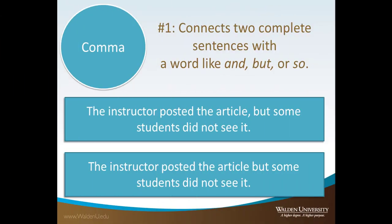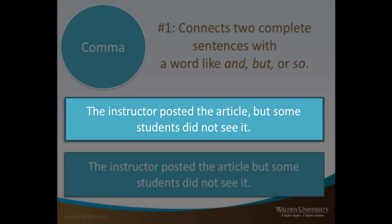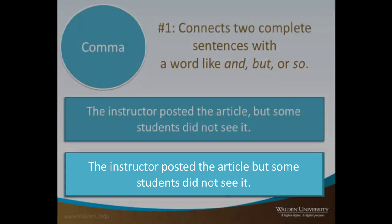Commas in academic writing follow a few patterns and we're going to focus on two common uses of commas. First, commas are commonly used to connect two complete ideas in one sentence with a coordinating conjunction word like and, but, or so. The first example is correct because it includes a comma before the word but and the sentence includes two complete ideas. The second example is incorrect because it is missing the comma before the coordinating conjunction but.